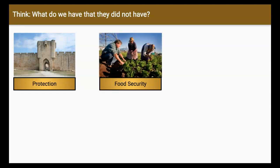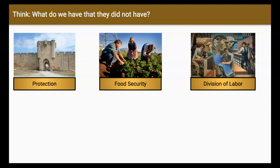Before the rise of civilization, there was no form of protection. In addition, there was no food security. Since people were very focused on protecting themselves and securing food only for themselves and their families, there was no efficient use of division of labor. Division of labor is where an overall task or production is divided among several people or phases of production.